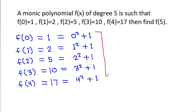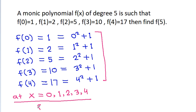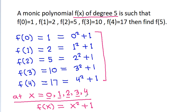From these 5 equations, we can say that at x = 0, 1, 2, 3, 4, f(x) is equal to x² + 1. But f(x) is of degree 5, and we have 5 points: 0, 1, 2, 3, 4.